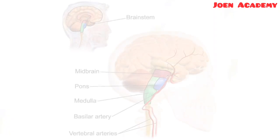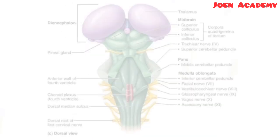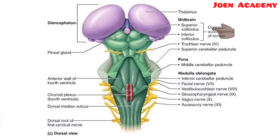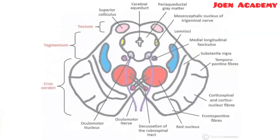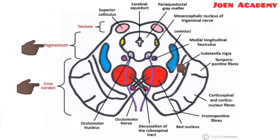Also, the midbrain provides a passageway for the structures passing between the cerebral cortex and the spinal cord. Some of the important parts of the midbrain include the tectum, which can also be called the roof or the quadrigeminal plate. The second part is the cerebral peduncles. Also, the midbrain has a part called the crus cerebri. We can also see the tegmentum and also the substantia nigra.